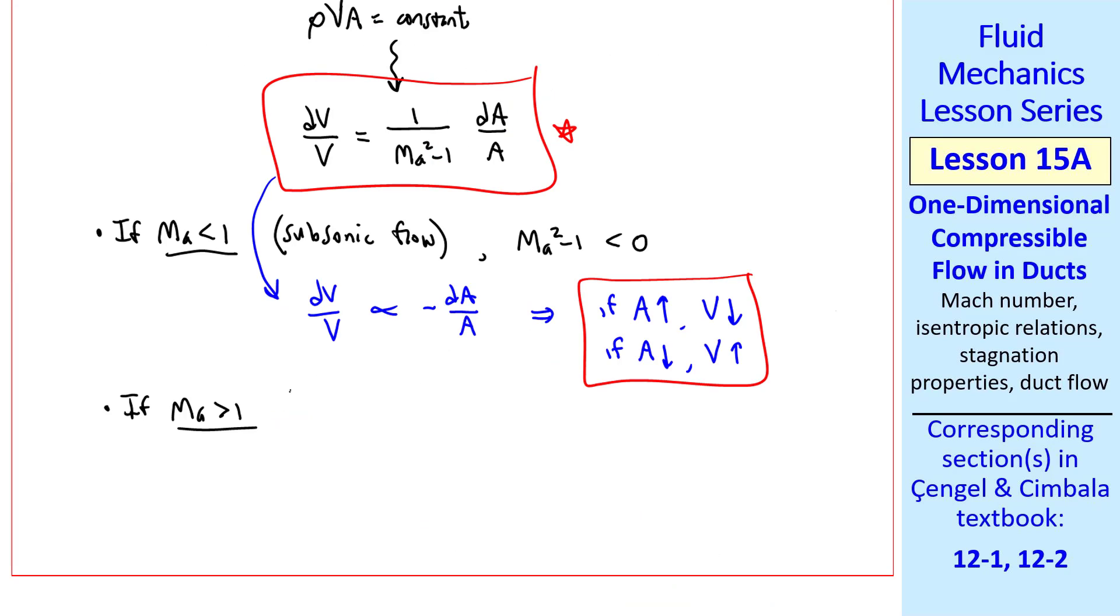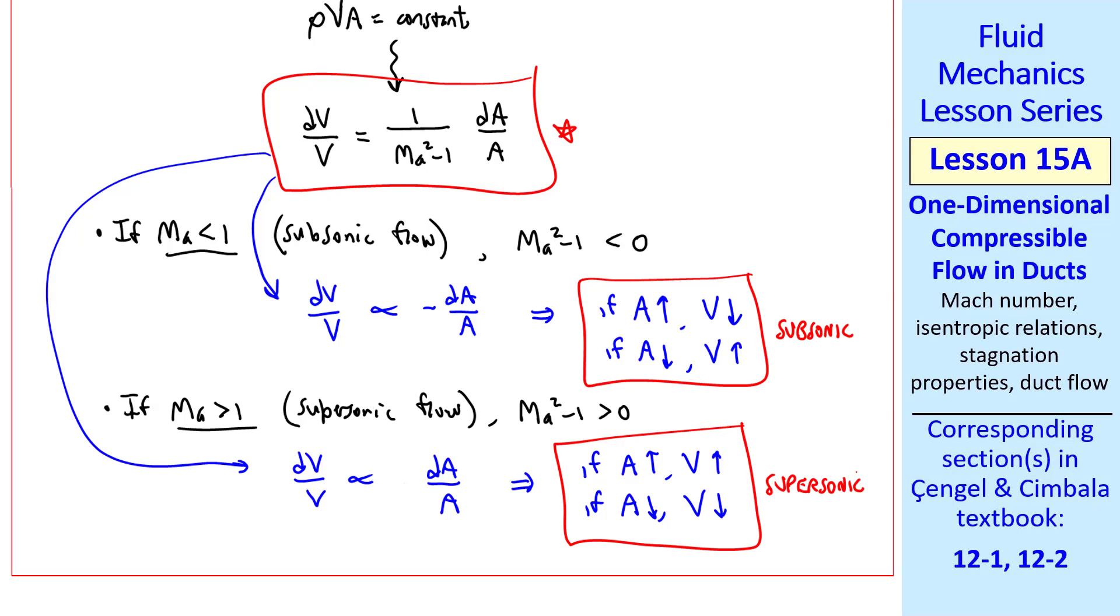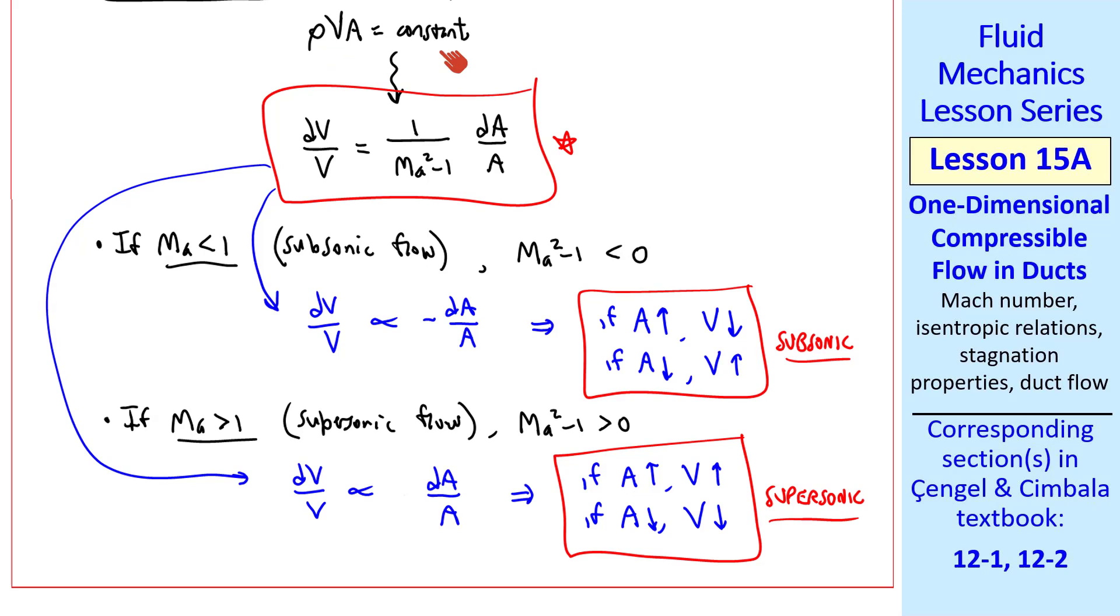But if Mach number is greater than 1, in other words supersonic flow, then this term Ma squared minus 1 is positive. So dV/V goes like dA/A with no negative sign. So if A goes up, V goes up, and if A goes down, V goes down. We see there's a fundamental difference between subsonic and supersonic flow behavior. How can the speed go up if the area goes up? The answer lies in conservation of mass. The density is changing rapidly in a supersonic flow. So when the area goes up, the density goes down so fast that V has to go up to keep rho VA constant.